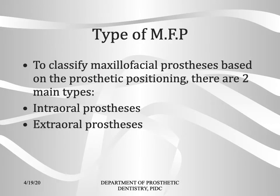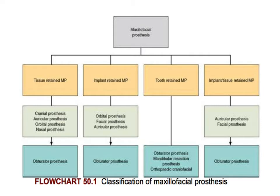To classify maxillofacial prostheses based on prosthetic positioning, there are two main types: intraoral prostheses and extraoral prostheses. Based on the mode of retention and area of coverage, prostheses can be tissue-retained, implant-retained, tooth-retained, or implant-and-tissue-retained maxillofacial prostheses.